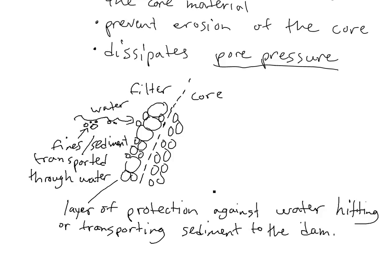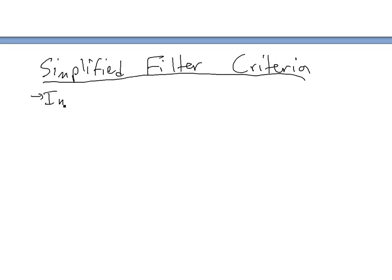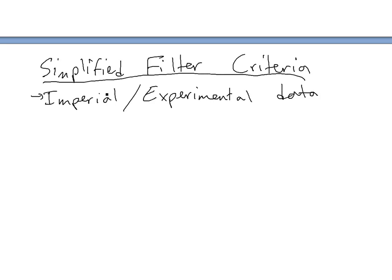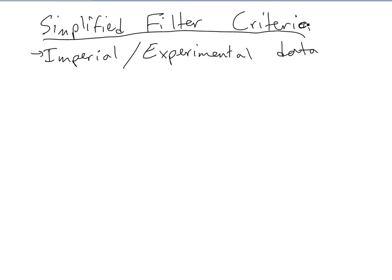Now we'll look at the simplified filter criteria. This is an empirical or experimental-based approach — after years of engineering in soil mechanics, soil mechanic engineers, civil engineers, and geotech engineers all decided on this criteria. It's a simple, quick way of deciding what filter you'll need.